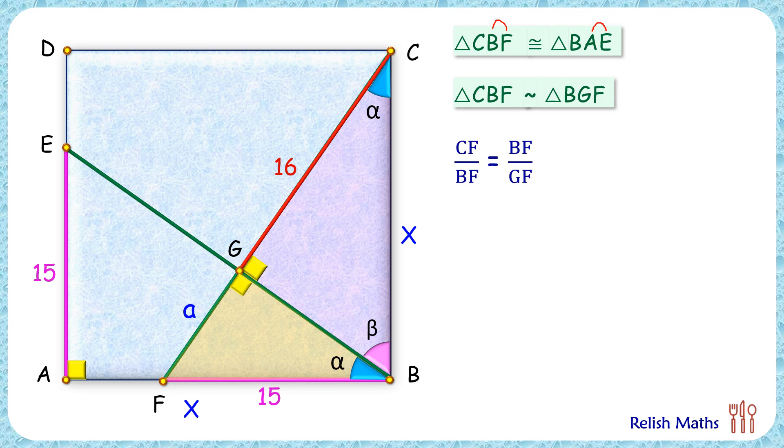Here, putting the values, we have CF, that is this full length, 16 plus a. BF is 15 centimeter and GF is a centimeter. So we are getting 16 plus a upon 15 equals 15 by a.